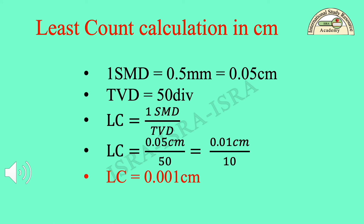Least count calculation in centimeters: 1 SMD is equal to 0.5 mm, which equals 0.05 cm. TVD is equal to 50 divisions. Least count LC is equal to 1 SMD over TVD, which is 0.05 cm over 50, or 0.01 cm over 10. Therefore least count LC is equal to 0.001 cm. This least count is in three decimal places in centimeters.